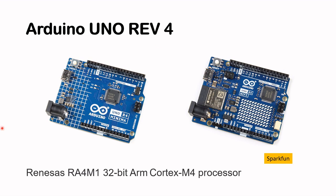So why Cortex M4? The Arduino Uno R4 features this processor. This is the Arduino Uno R4 Minima and this is the Arduino Uno R4 Wi-Fi. By the way, these two images are from SparkFun. These boards feature the Renesas RA4M1 32-bit ARM Cortex M4 processor.